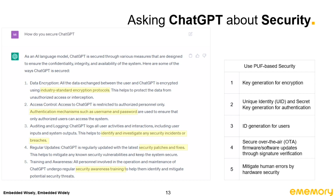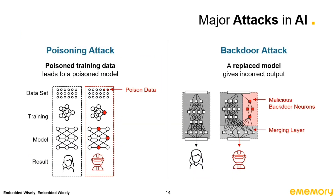Before understanding how our security solution works, we must first understand some of the popular attacks that can happen not only in ChatGPT but also in AI systems in general. There are four types of major attacks. The first one is called a poisoning attack. A poisoning attack happens when the attacker tampers with the training data, which will then affect the training model, allowing the hacker to manipulate the results through the model.